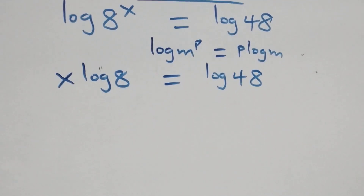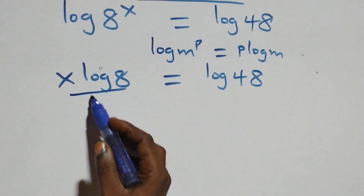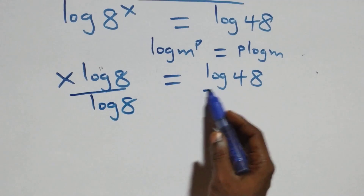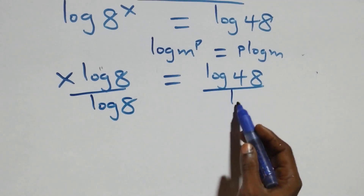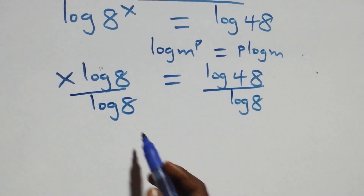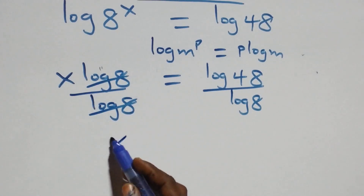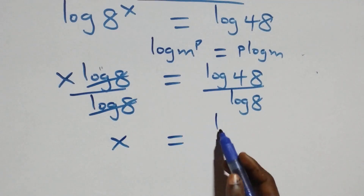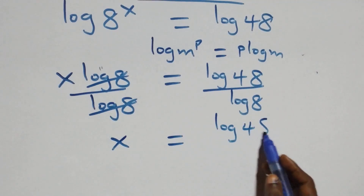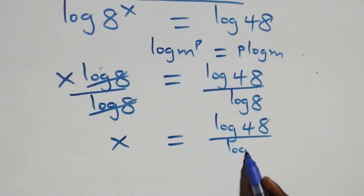Next step, we divide both sides by log 8 — divide this side by log 8, and also divide this side by log 8. The log 8 terms cancel each other, and we have x left, which is equal to log 48 over log 8.